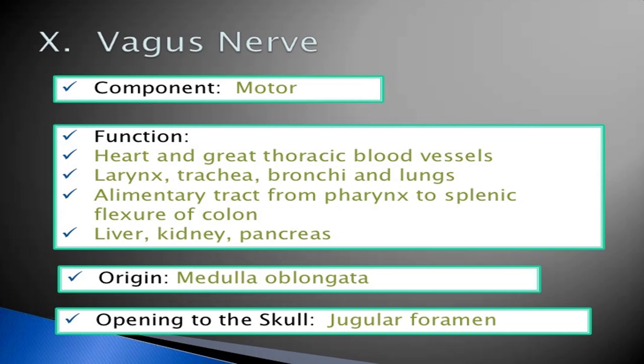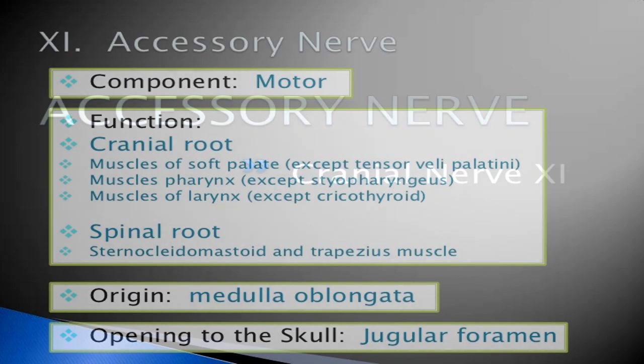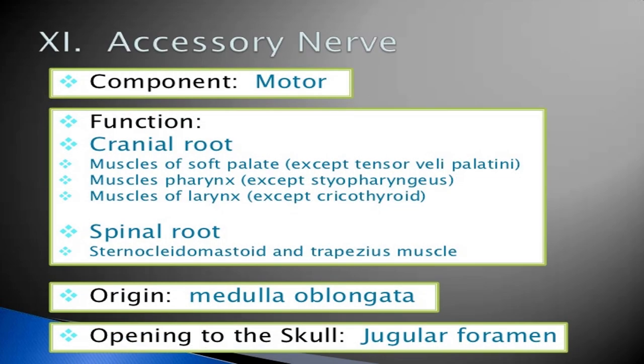The eleventh cranial nerve is the accessory nerve. Its component is motor. Its function is divided into cranial root and spinal root. The cranial root supplies muscles of the soft palate, pharynx, and larynx. The spinal root supplies the sternocleidomastoid and trapezius muscles. Its origin is the medulla oblongata. The opening of the skull is the jugular foramen.